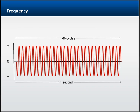In North America, the power system operates at a frequency of 60 Hertz, or 60 cycles per second. In other areas of the world, systems operate at a frequency of 50 Hertz.